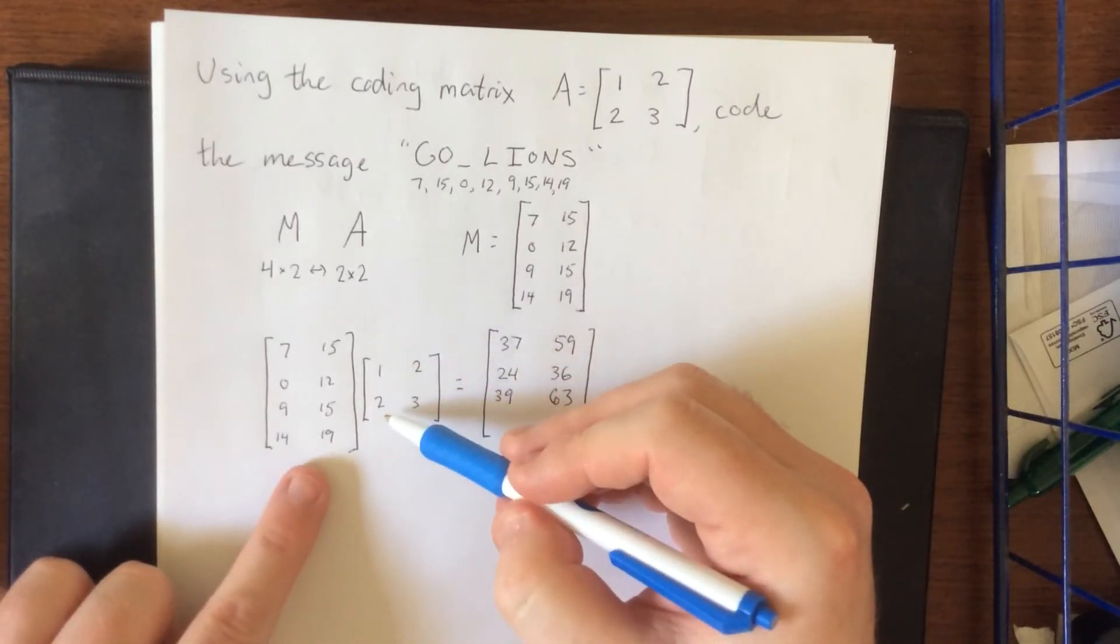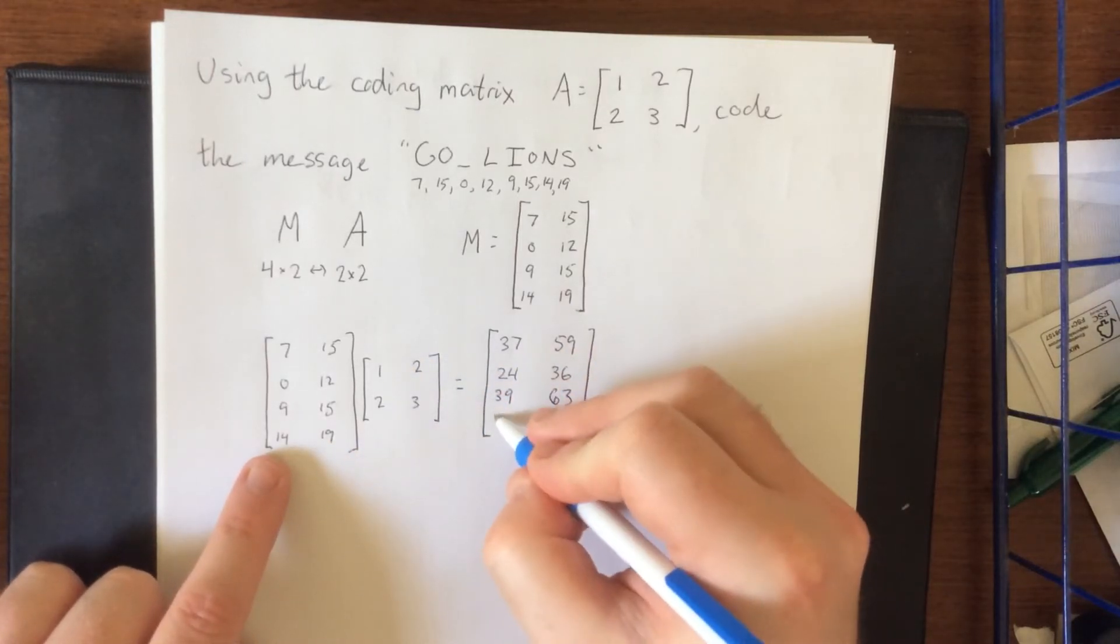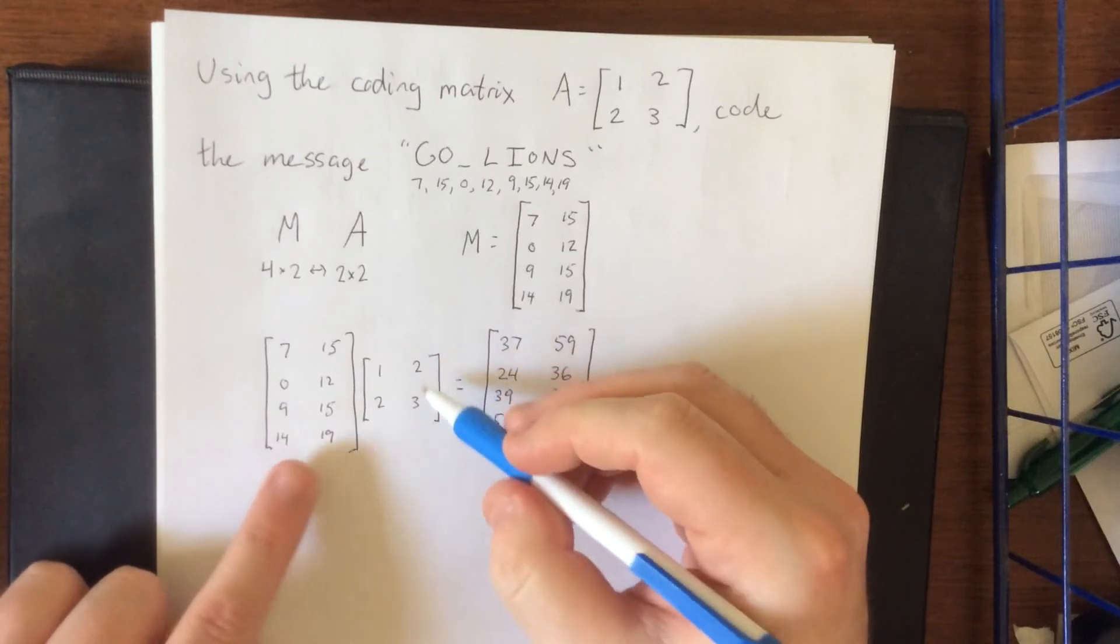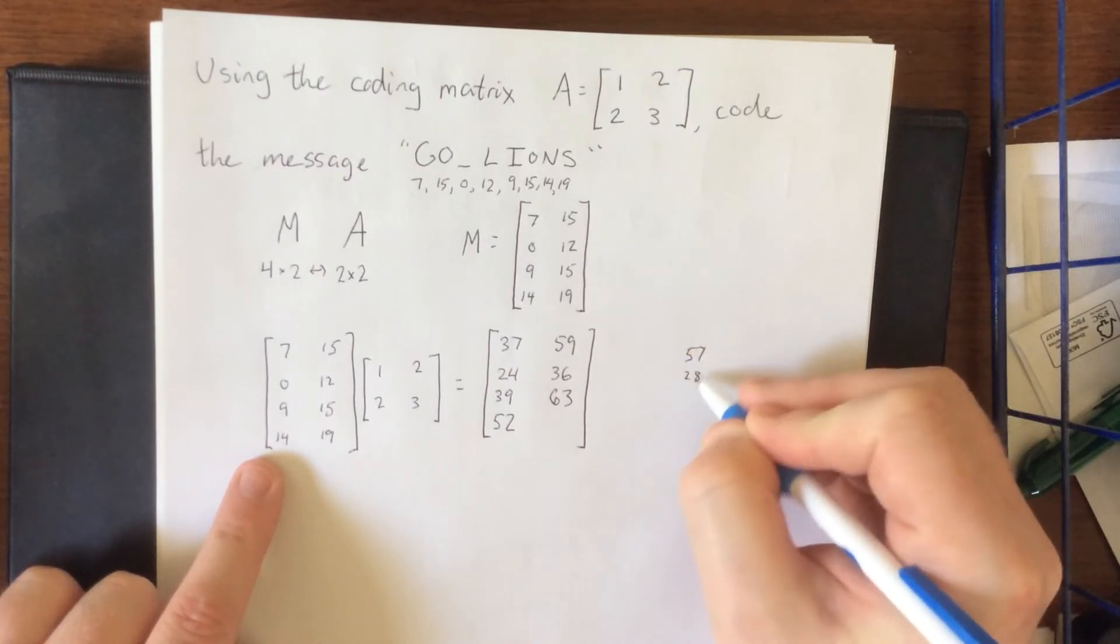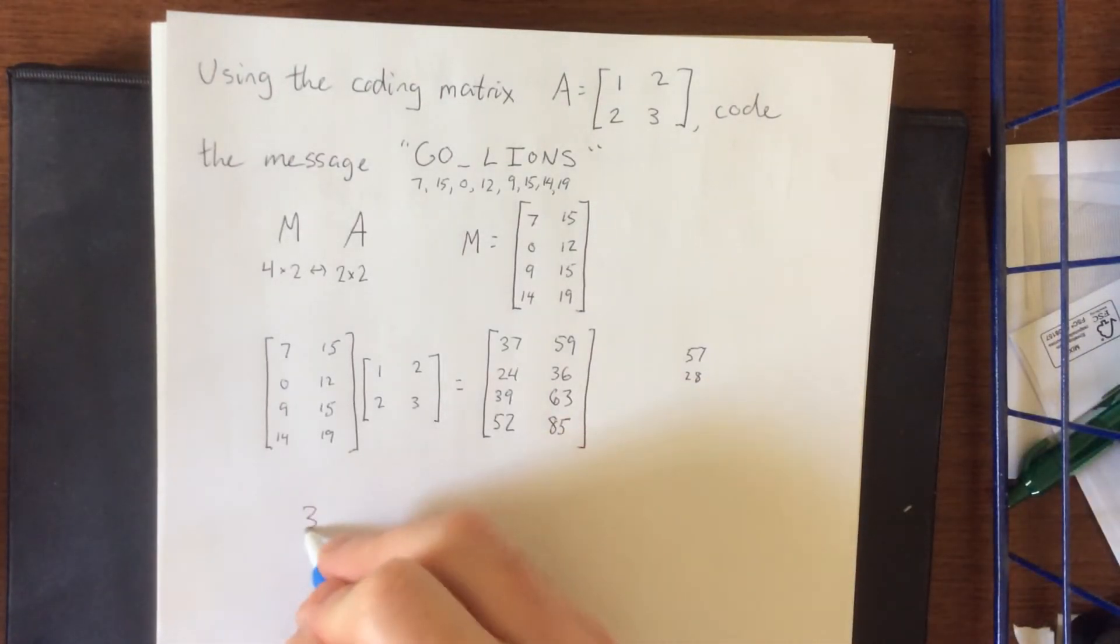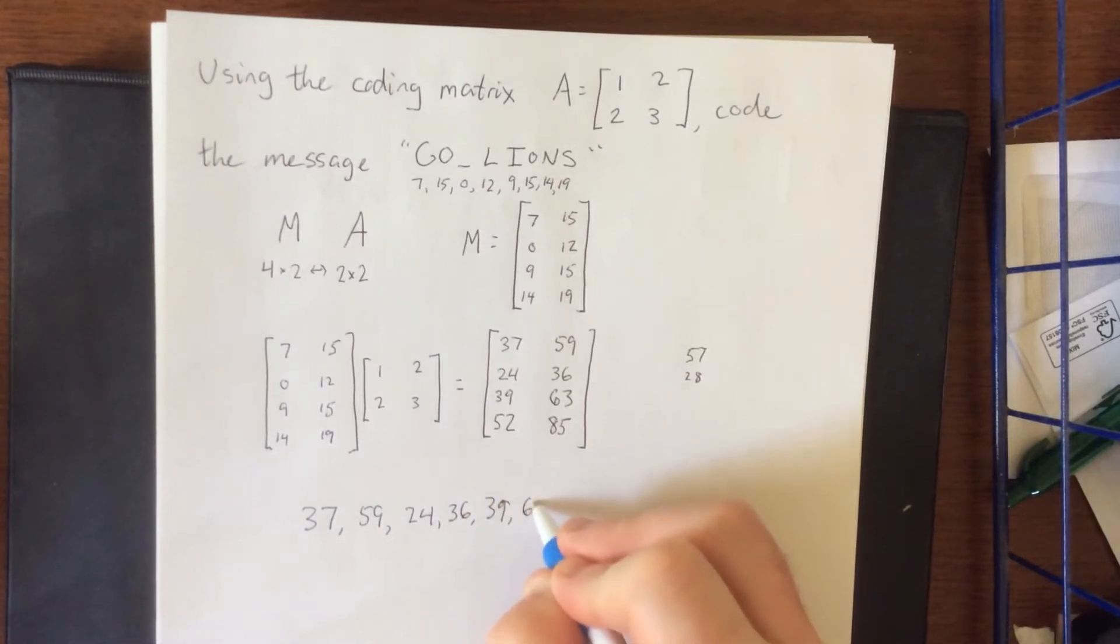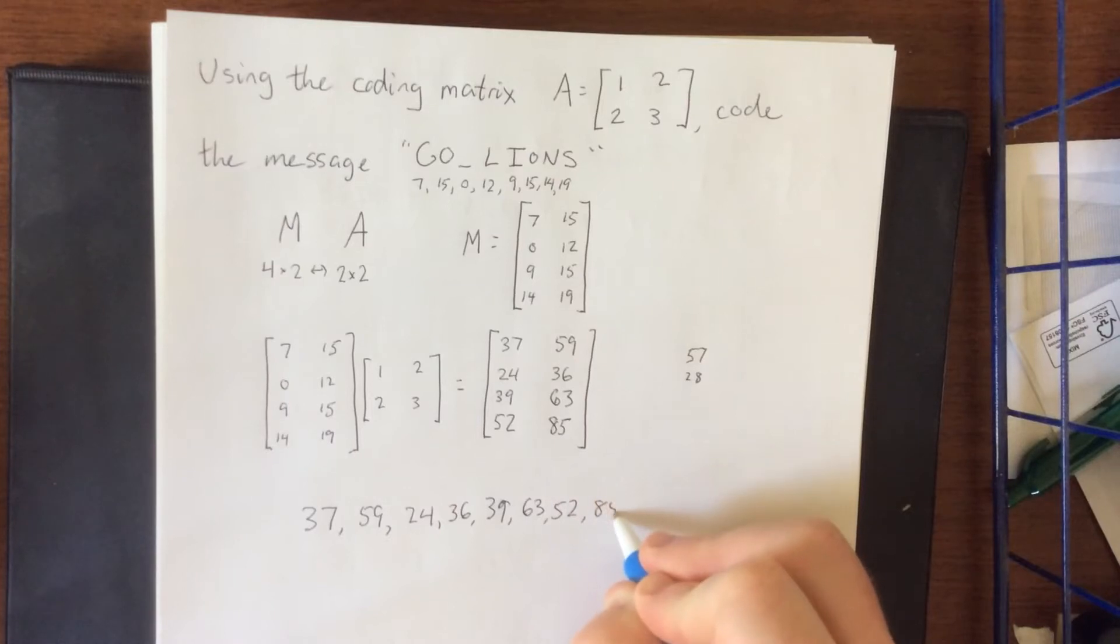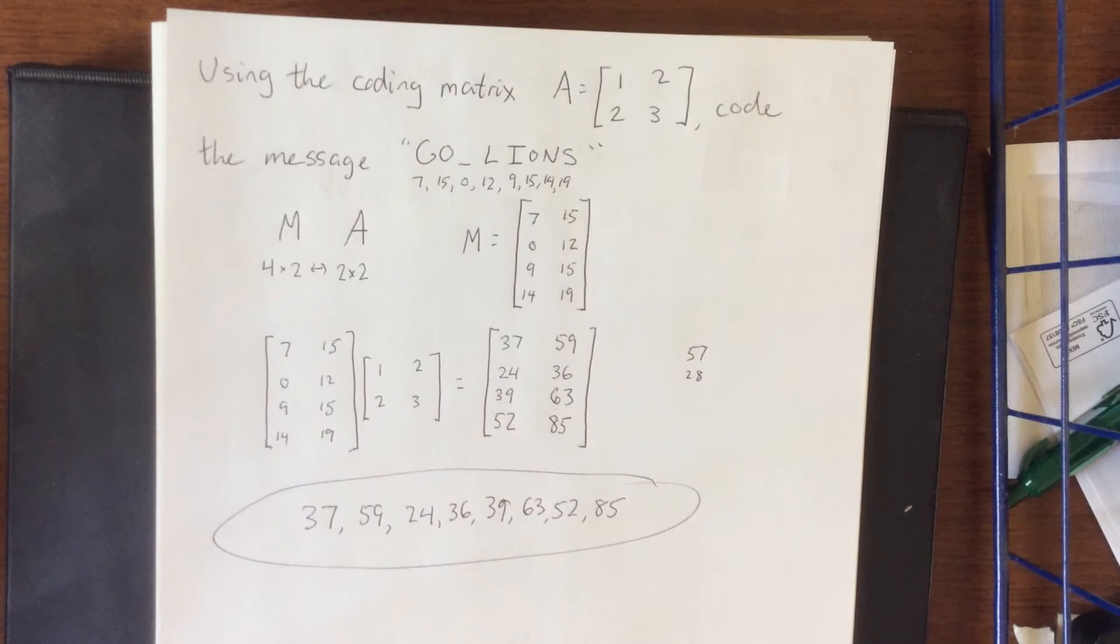And we have 1 times 14 plus 2 times 19, that's 57 plus 28. 57 plus 28, that's 15 plus 70, that'll be 85. So our coded message once pulled back out of the matrix will be 37, 59, 24, 36, 39, 63, 52, 85. So here is our coded message of Go Lions!